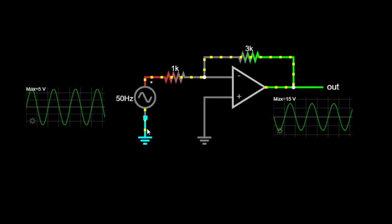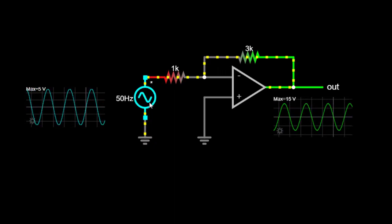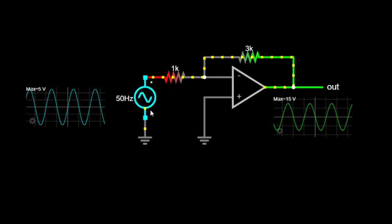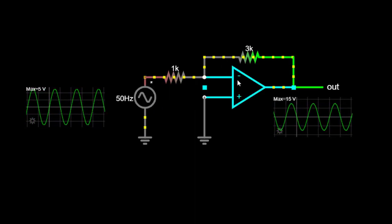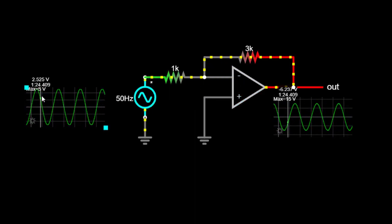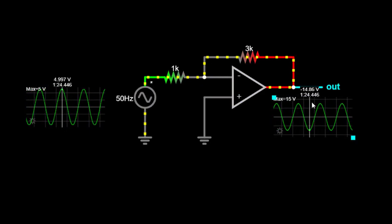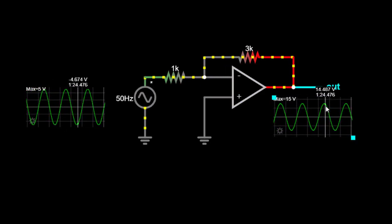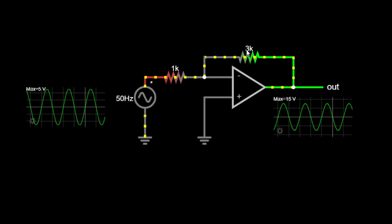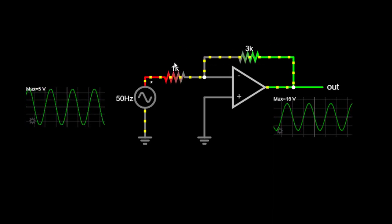Here's how the inverting amplifier circuit operates. When we apply an input voltage to the inverting input of the OPAMP, the OPAMP amplifies this signal and produces an output voltage. The gain of the inverting amplifier is determined by the ratio of the feedback resistor, RF, to the input resistor, R1.